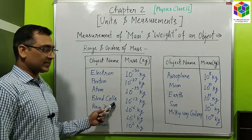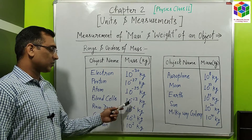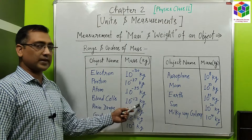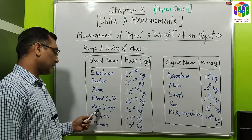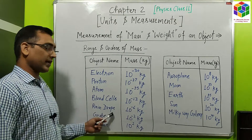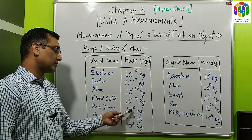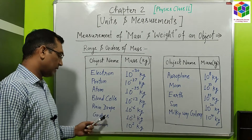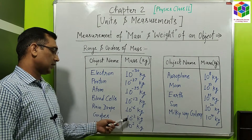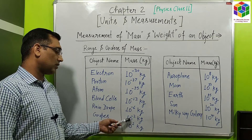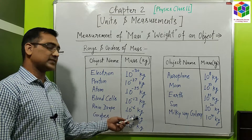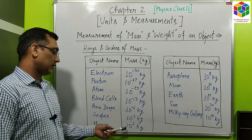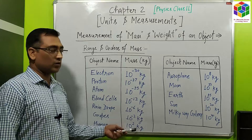The mass of a blood cell is approximately equal to 10⁻³⁰ kg. The mass of a raindrop is equal to 10⁻⁶ kg. The mass of grapes is equal to 10⁻³ kg. The mass of a human is 100 kg.